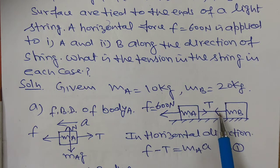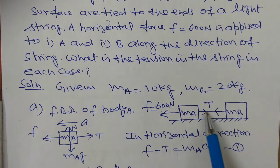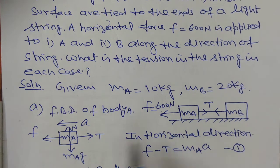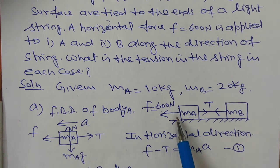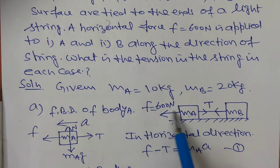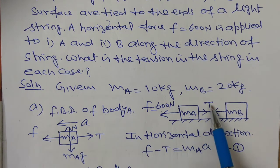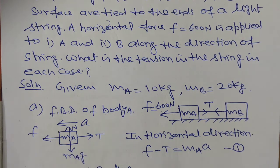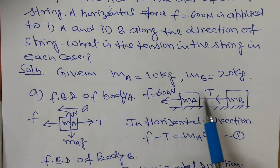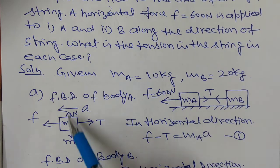So in the first case we need to find the tension in the string. In both cases we need to find the tension. Mass of body A is 10 kg and mass of body B is 20 kg. Both are tied with a string. In this string, tension develops when we apply the force. Now we draw the free body diagram of body A. The free body diagram shows all forces on the body.